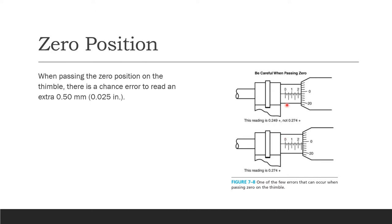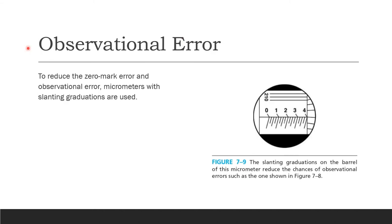When passing the zero position on the thimble, there is a chance of reading an extra 0.50 millimeter (0.025 inch) error. To reduce this thimble-zero mark observation error, micrometers are made with slanting graduations on the barrel, which reduces the chances of observational errors.